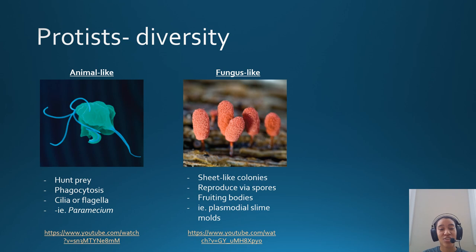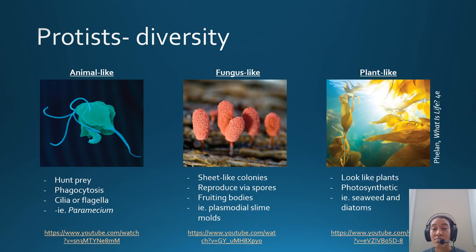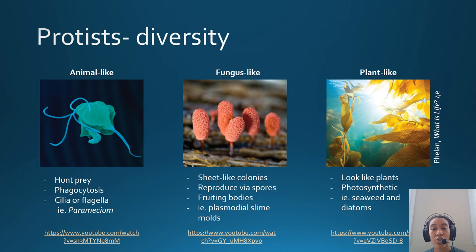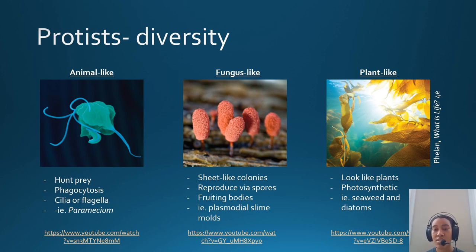Some examples of plant-like protists include seaweed — which is massive and you might think is a plant, but it's actually a protist — and diatoms. Diatoms are pretty cool; even though we never really see them, they exhibit really cool shapes and geometric patterns. Seaweed and plant-like protists are photosynthetic like plants, which makes them plant-like. Click on the YouTube link below to see some diatoms.